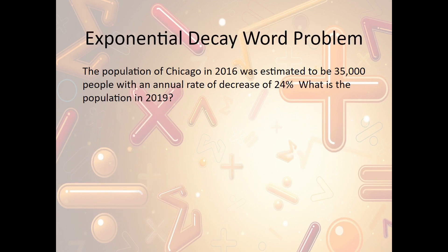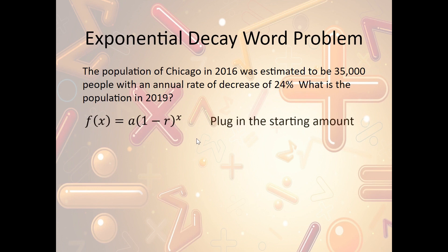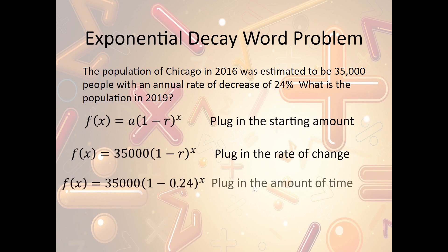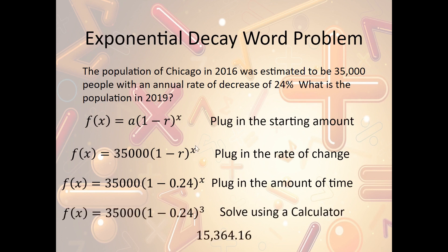Now let's look at exponential decay. The population in Chicago is decreasing by 24%. We use f(x) = a · (1 − r)ˣ. Starting amount a = 35,000, rate r = 0.24, and time x = 3 years from 2016 to 2019. Solving with a calculator, we get 15,364.16 people.